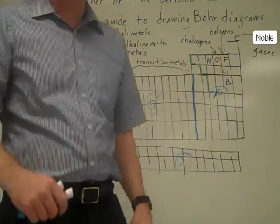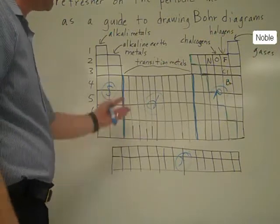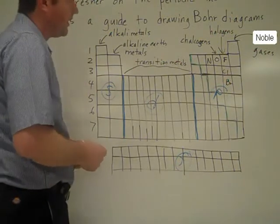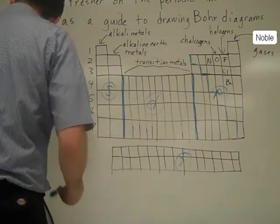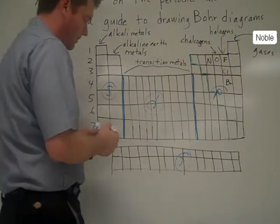In order for me to use the periodic table as a guide to draw my Bohr diagram, I have to pick my element. That's the first important step. Say an element's been assigned to me, let's say it was arsenic, which would be right here.